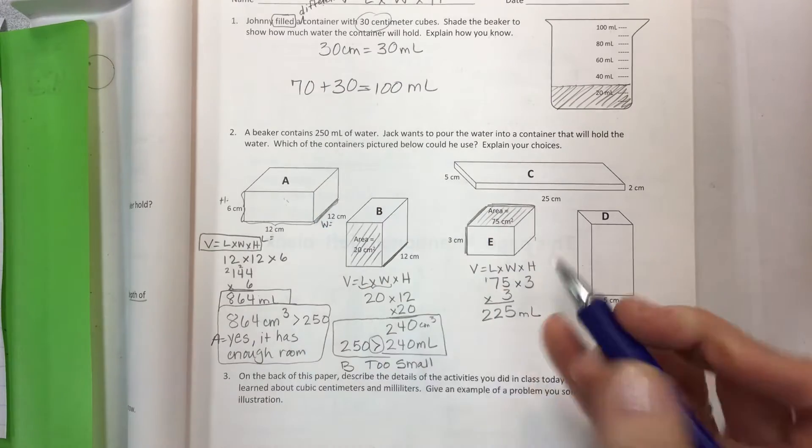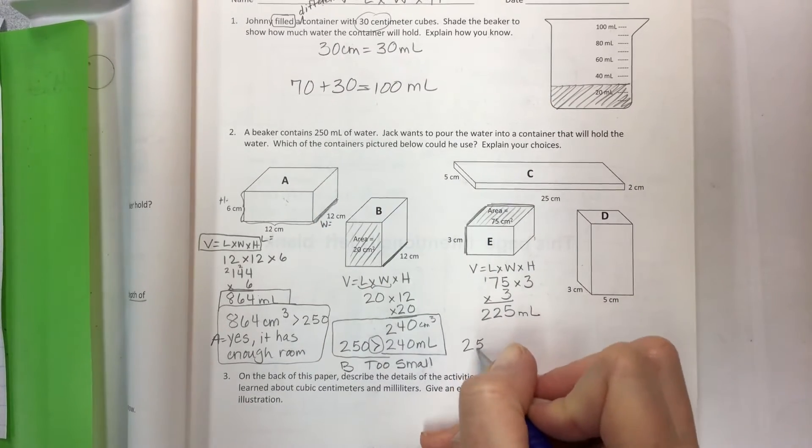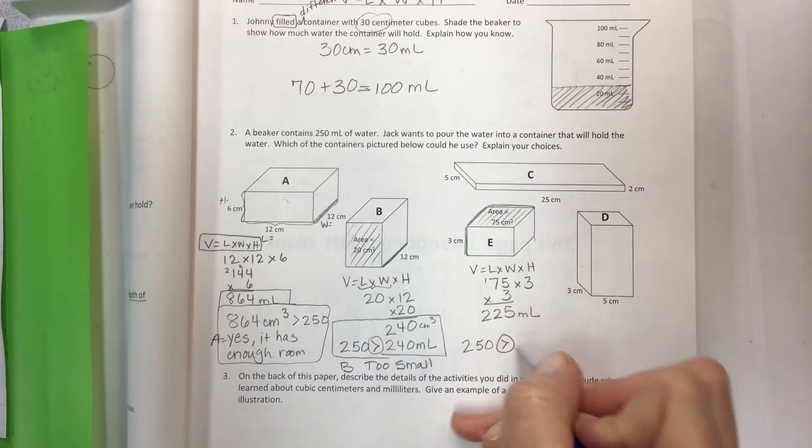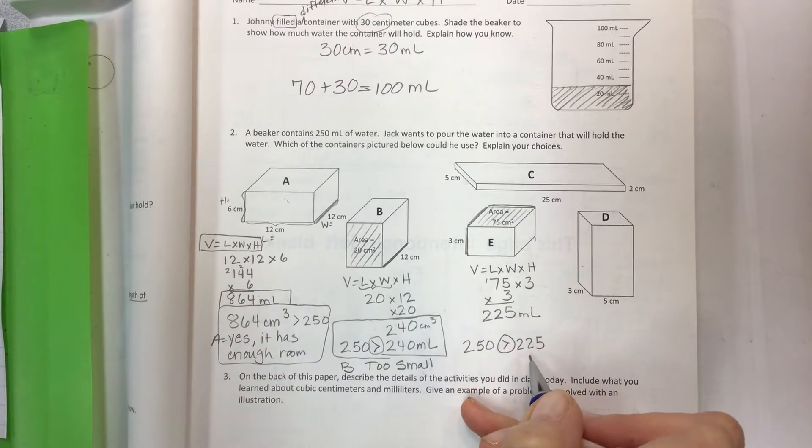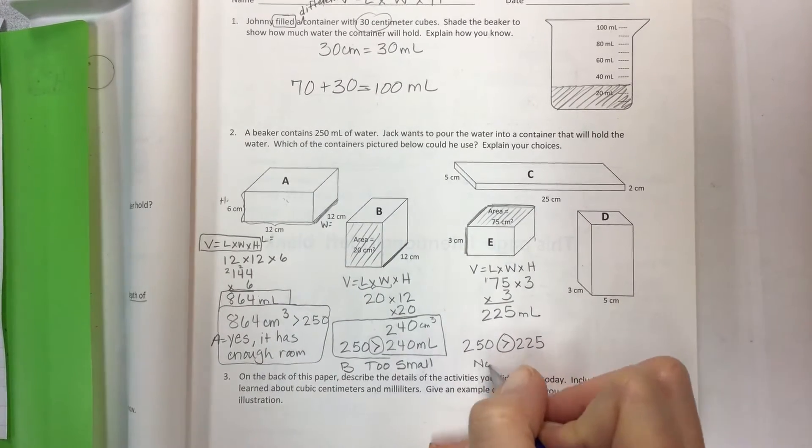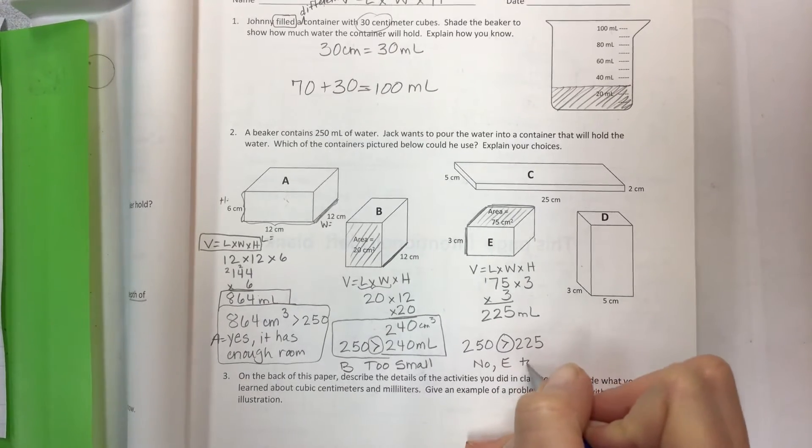The container is 250, so compare those. 250 is greater than 225 so no, E is too small.